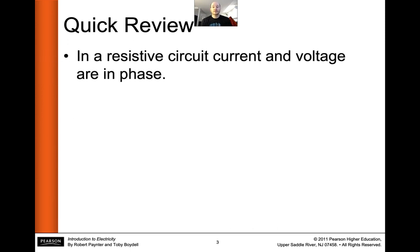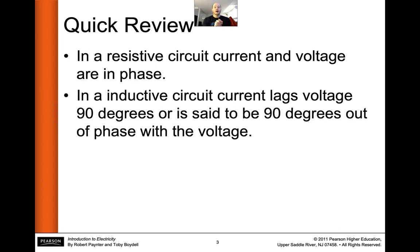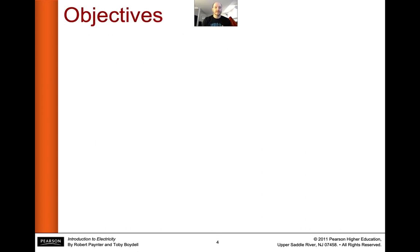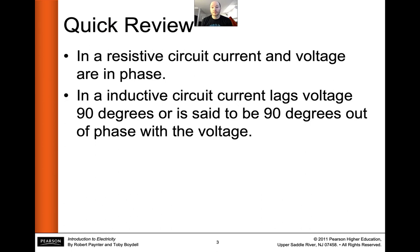In a resistive circuit, current and voltage are perfectly in phase with each other. In an inductive circuit, they are 90 degrees out of phase with each other. That's going to be really important to remember, because when we have a resistor and an inductor, we are going to have to be concerned with how out of phase our voltage and current are. In a purely inductive circuit, we know they're 90 degrees. We'll be discussing what that phase angle is and all the different ways to calculate it and the effects it can have on a circuit.